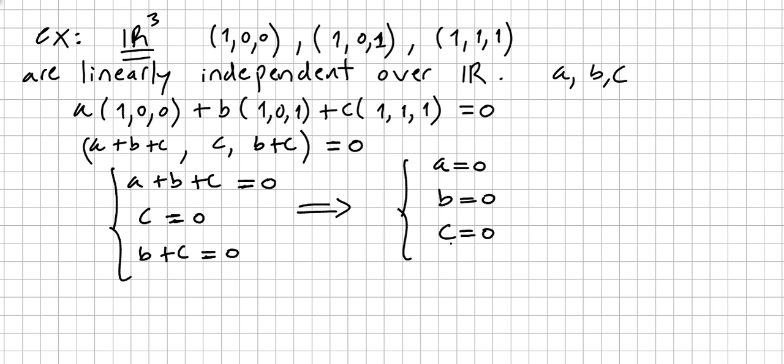So it proves that these three vectors are linearly independent, because according to the definition, these a's, these a1, a2, a3, or a, b, c in this case, that are in the field, should not all be 0. And in this case they are all 0. So these three vectors are not dependent, so they are independent.